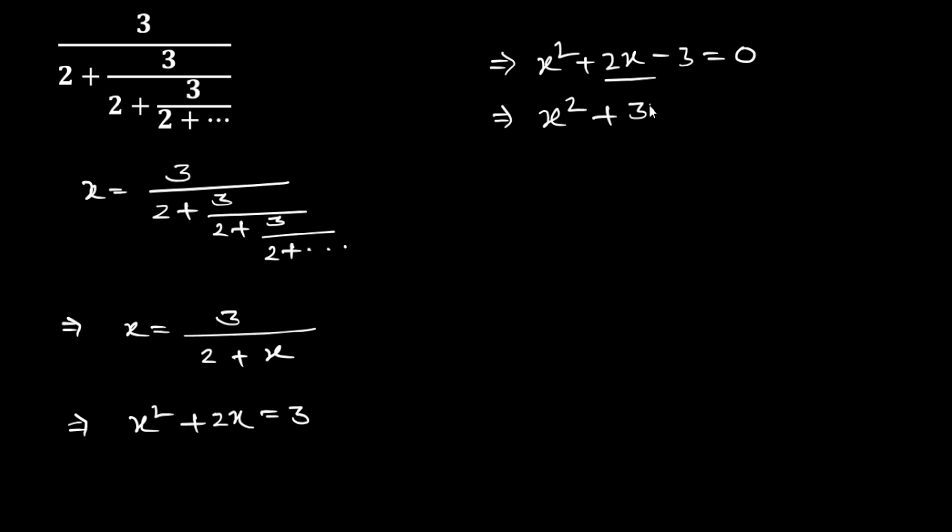So now take common X from these two terms and take minus 1 times X plus 3 common from these two terms.